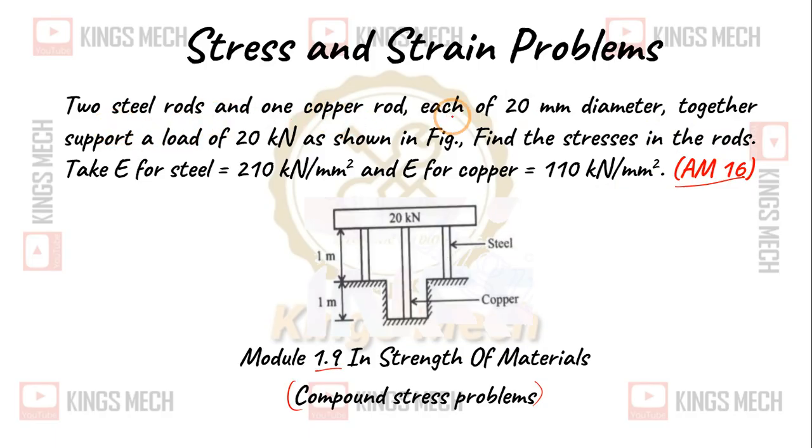Two steel rods and one copper rod, each of 20 mm diameter. Now, ds which is equal to dc. Together support a load of 20 kN as shown in the figure. Find the stresses in the rod. Take E for steel equal to 210 kN per mm squared and E for copper equal to 110 kN per mm squared, into 10 power 3.